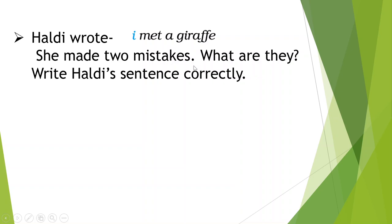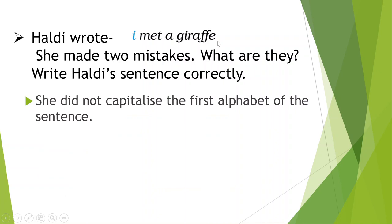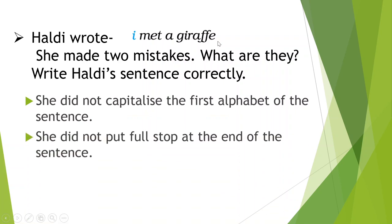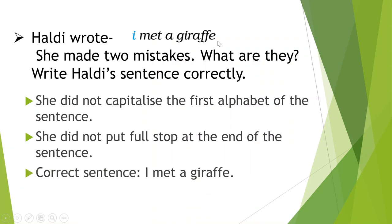Haldi wrote like this. Here, she made two mistakes. What are they? Write Haldi's sentence correctly. Think which two mistakes she made. The first letter is small — the sentence should always begin with a capital letter, so the letter 'I' should always be capital. And the sentence should end with a full stop. She did not capitalize the first alphabet of the sentence, and she did not put a full stop at the end. The correct sentence is: 'I met a giraffe.' Here she has written 'I' in capital, and at the end of the sentence there is a full stop.